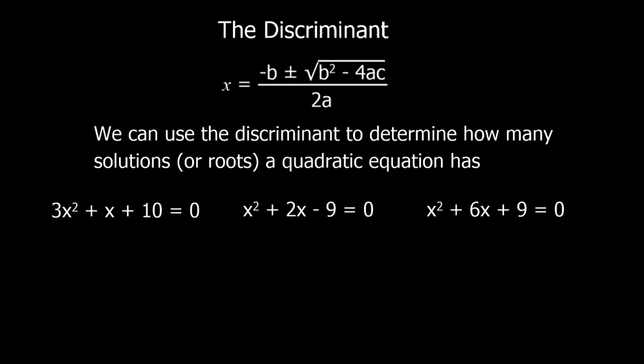This video is about the discriminant. The discriminant is part of the quadratic formula: x equals minus b plus or minus the square root of b squared minus 4ac, all over 2a. The discriminant is the bit inside the square root sign, so the discriminant is b squared minus 4ac.